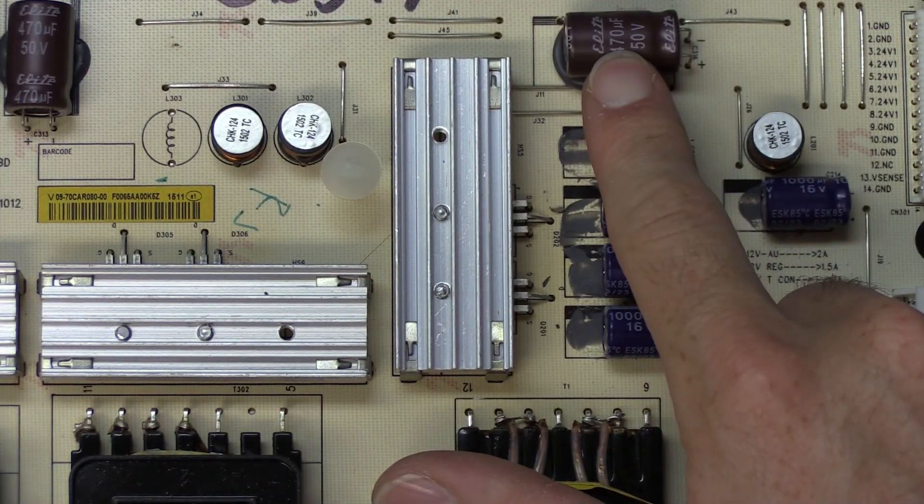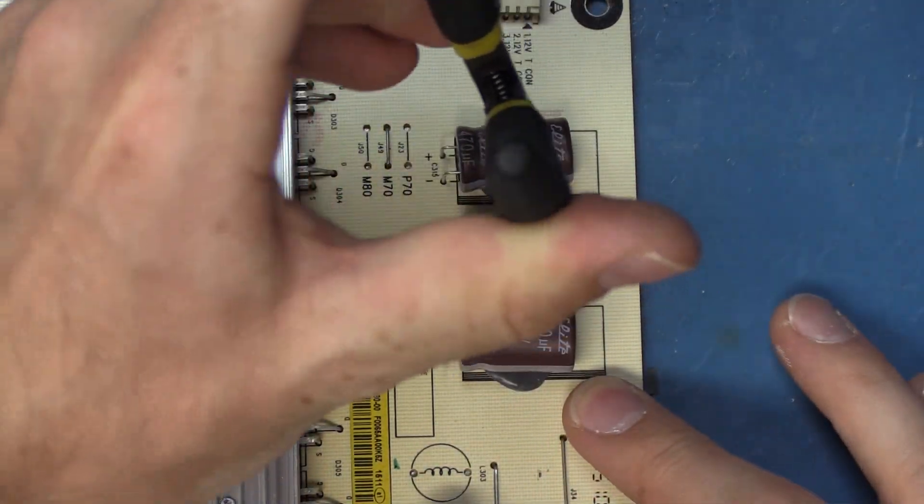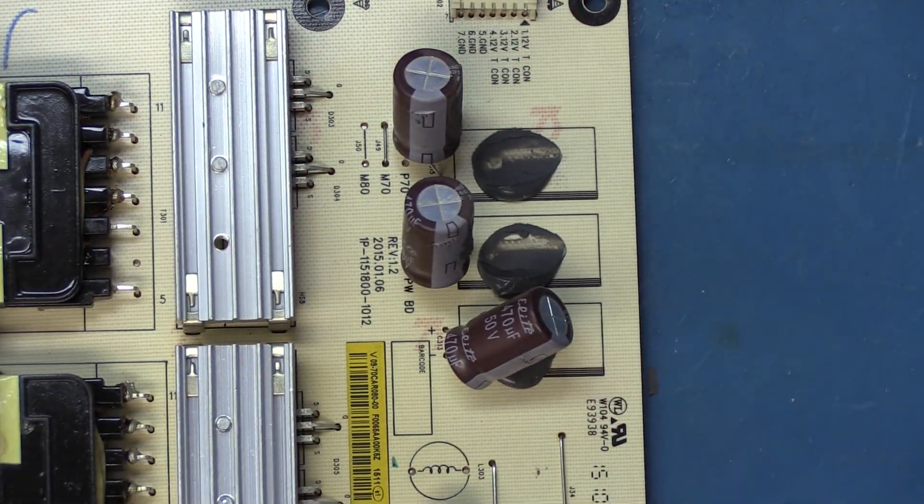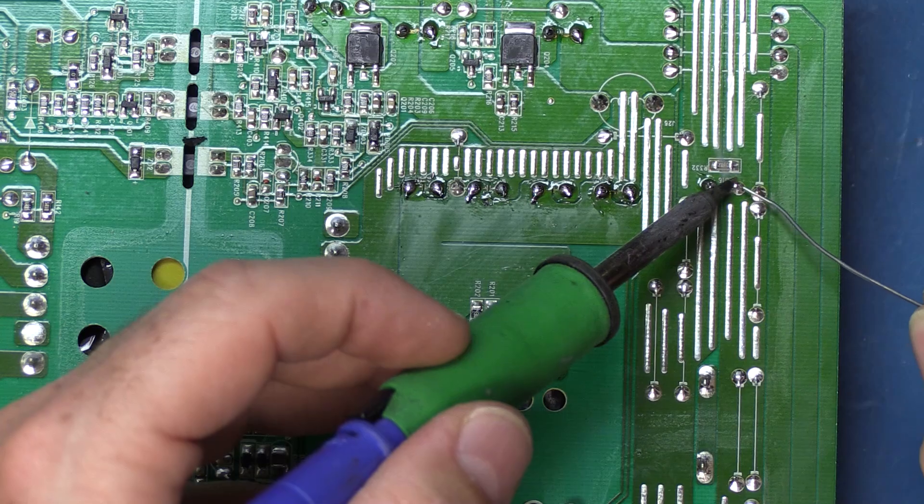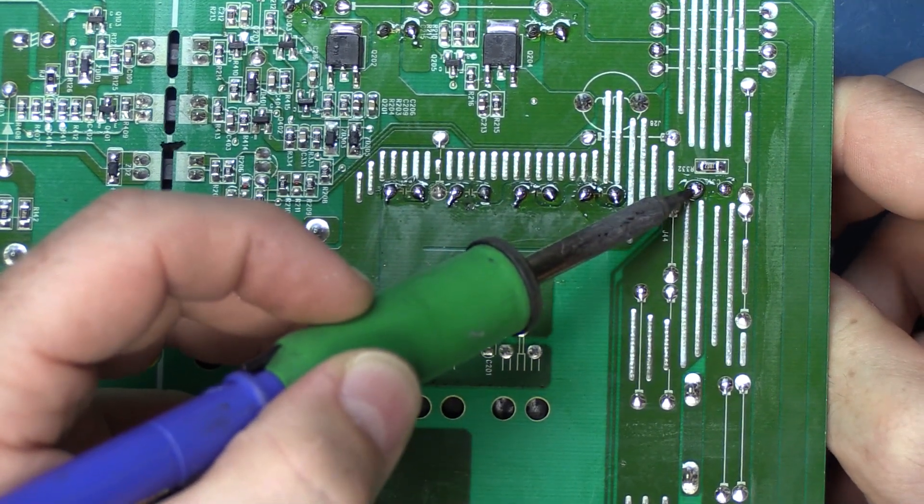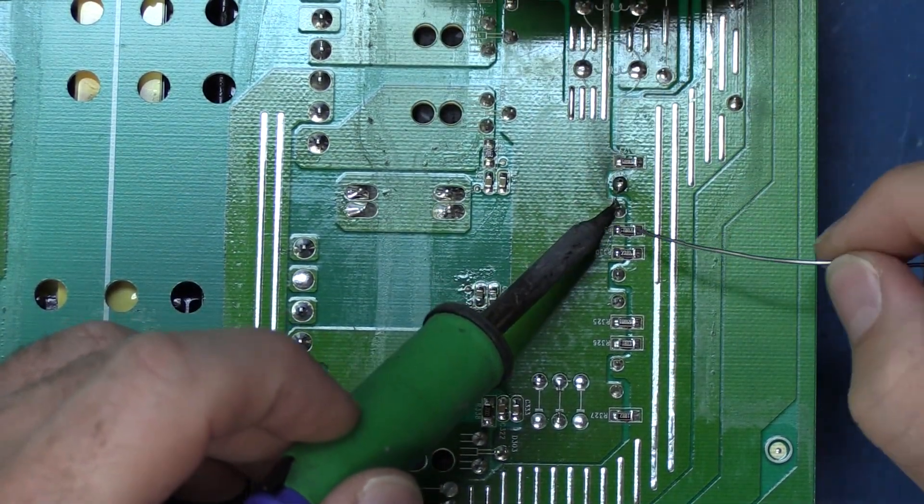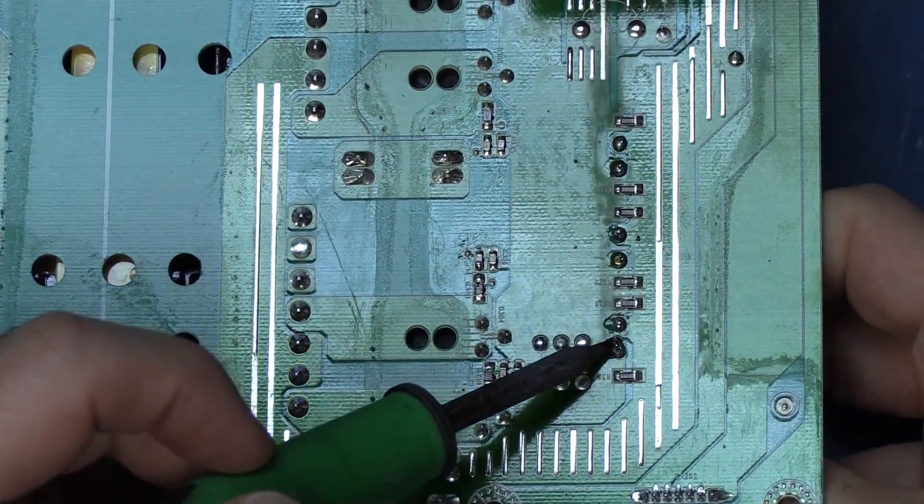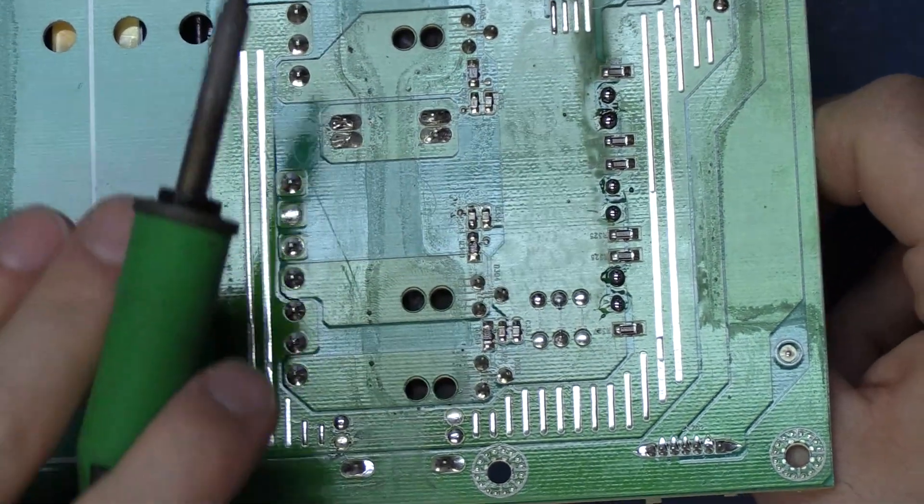Now we're going to do the same thing with this 470 microfarad 50 volt capacitor as well as the three over here. So for these because I'm not going to be testing them we're just going to use our pliers. I don't really care about damaging them. All right same thing with these we're going to start by adding some new solder and then we're going to wiggle the capacitor out from the back. Here we go that's our first one and then we have the next three all right next to each other here. There's our first, second, and third capacitor. So that's all four.